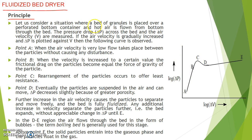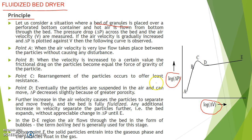Consider a situation where a bed of granules is placed over a perforated bottom container and hot air is blown from the bottom through the bed. The pressure drop delta P across the bed and the air velocity V are measured. If the velocity is gradually increased, we plot a curve between log delta V versus log delta P and obtain a characteristic curve.